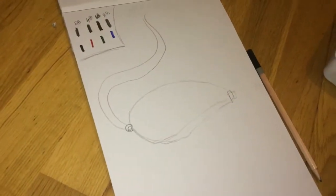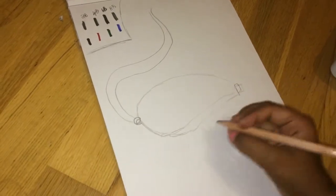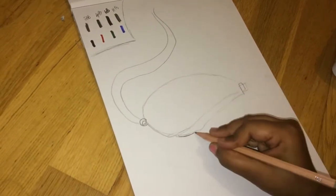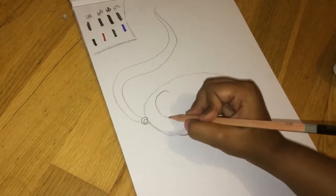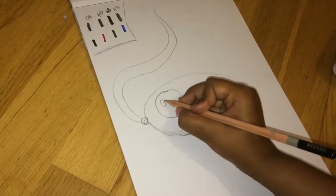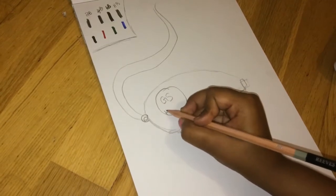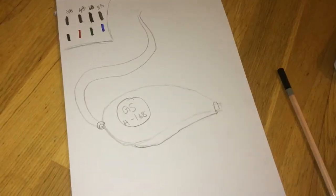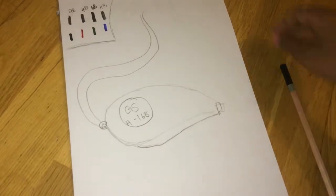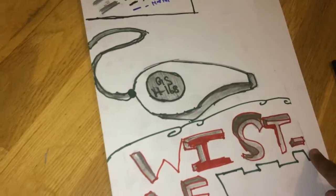Now I'm going to start drawing the details. Now you can color it. If you want you can write like this: Whistle.